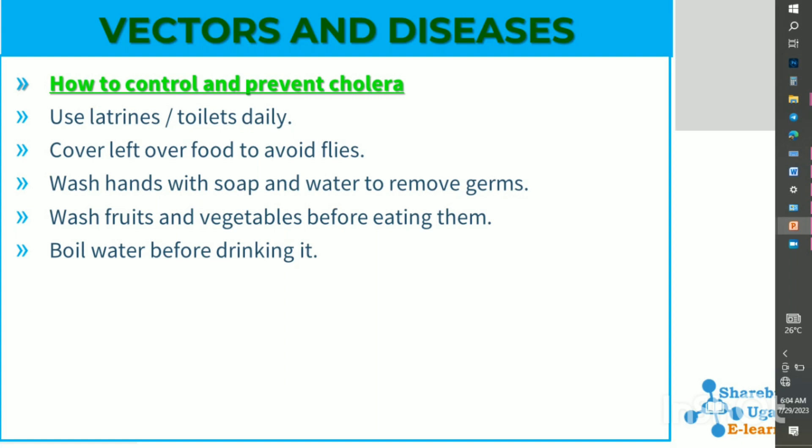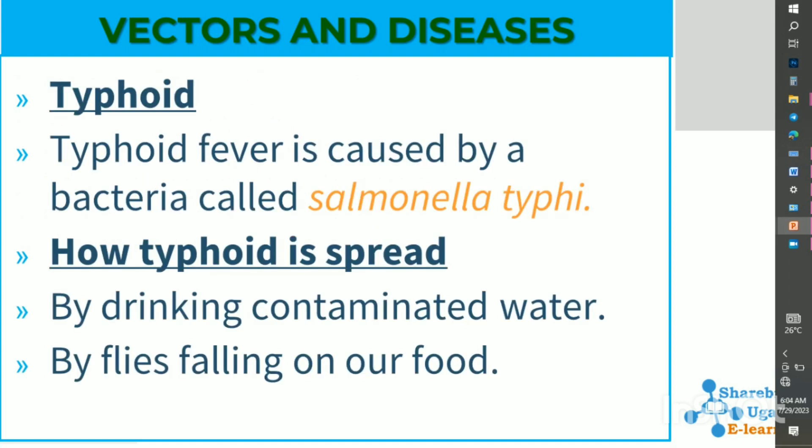We can prevent cholera by using latrines daily and cleaning them, covering leftover food to avoid flies landing on it, washing hands with soap and water to remove germs, washing fruits and vegetables before eating them, and boiling drinking water. Another disease caused by houseflies is typhoid, a fever caused by a bacteria called Salmonella typhi.